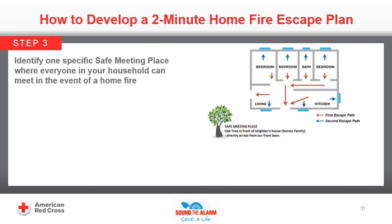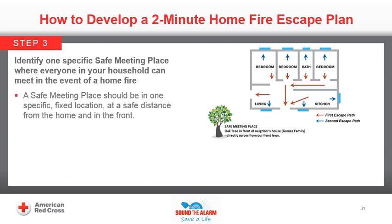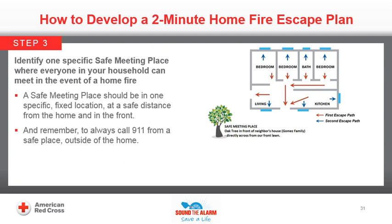Step 3: Identify one specific safe meeting place where everyone in your household can meet in the event of a home fire. A home fire is confusing — everyone in the household may escape via a different route. A safe meeting place should be in one specific fixed location at a safe distance from the home and in the front, so that everyone can meet firefighters when they arrive and inform them that everyone is out. For a safe meeting place to work, everyone in your household needs to know where it is. Always call 911 from a safe place outside of the home.